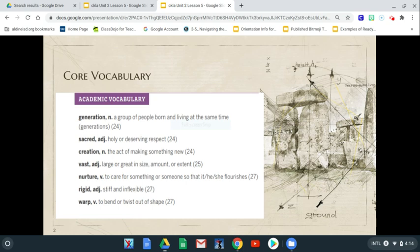The first word that we're going to introduce and review is generation, which is a noun. It means a group of people born and living at the same time. For example, generation.